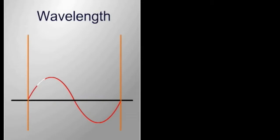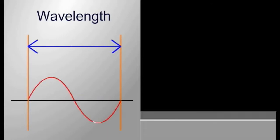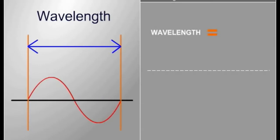The length of a sound pressure wave is known as its wavelength. Wavelength is the distance covered in one cycle. Wavelength is calculated by dividing the velocity by the frequency.